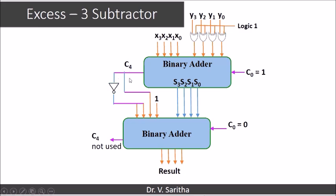If carry C4 equals 1, we add 0011 (i.e., 3) to the result. If no carry, we subtract 3 — when C4 is 0, the correction value is 1101, which is the 2's complement value of 3, representing minus 3. So we add 1101 to the result to get the final XS3 number. The C input of the second adder stage is 0, and C4 feeds the correction logic. In this fashion we perform XS3 subtraction.